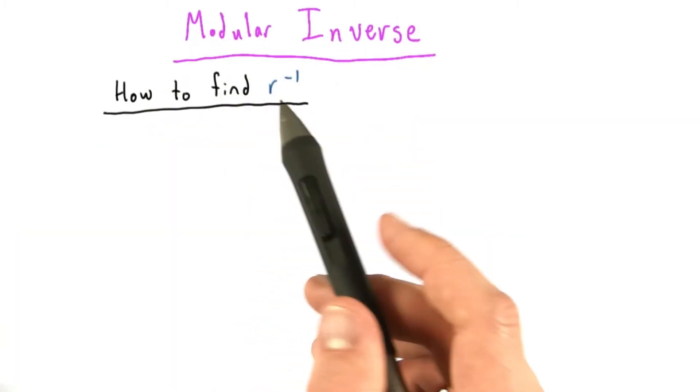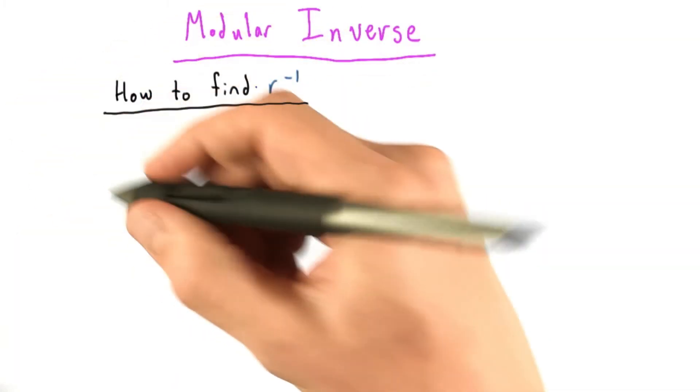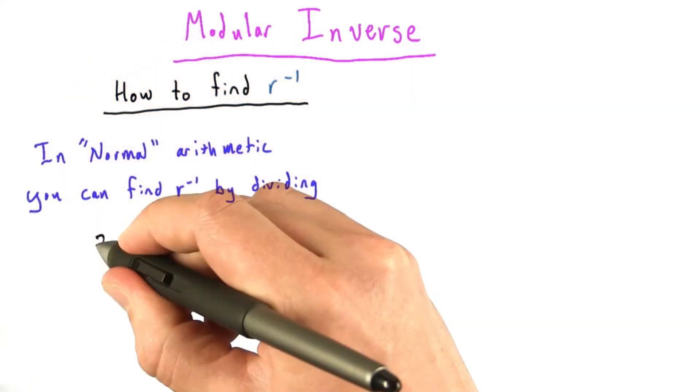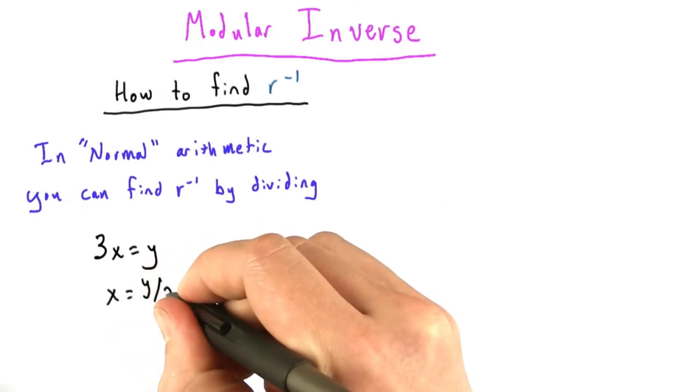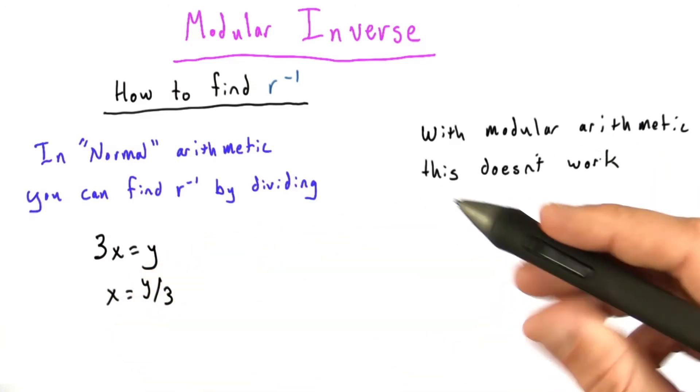So, in normal arithmetic, not modular, finding the inverse is easy. We can just divide by r. As a simple example, we have 3x equals y. We can find x by dividing by 3. But with modular arithmetic, this doesn't work.